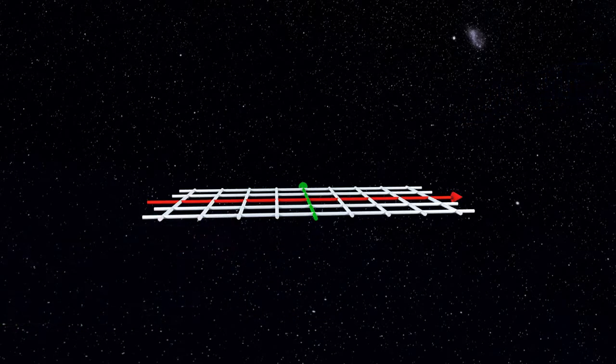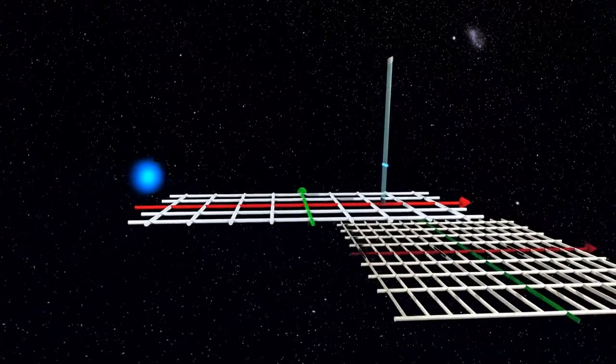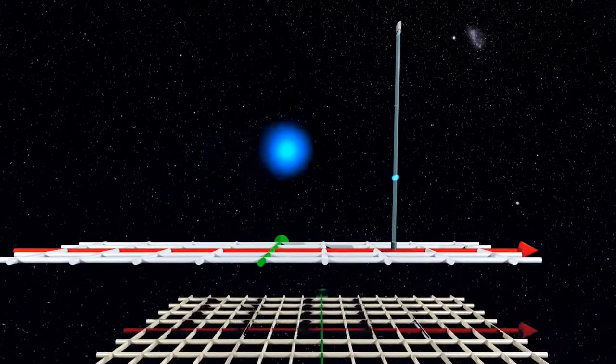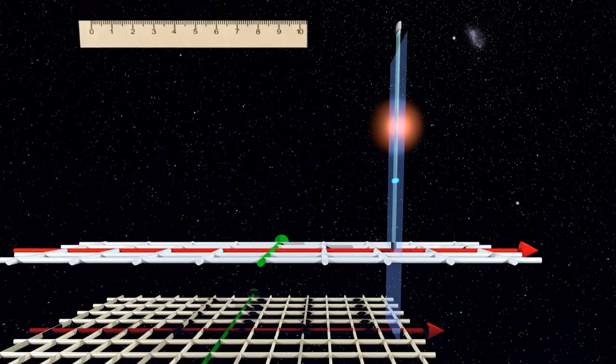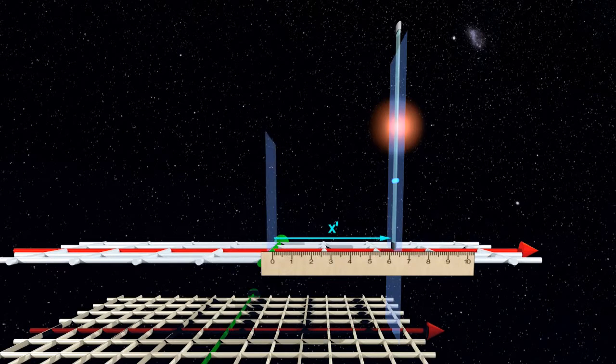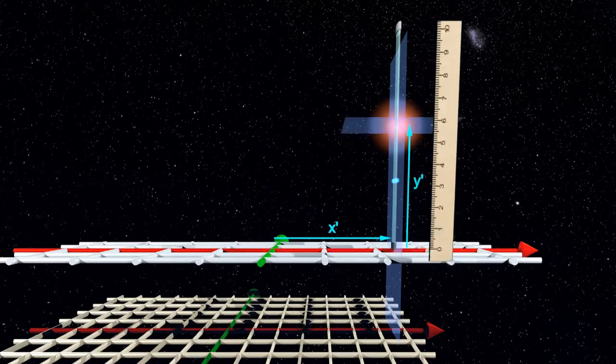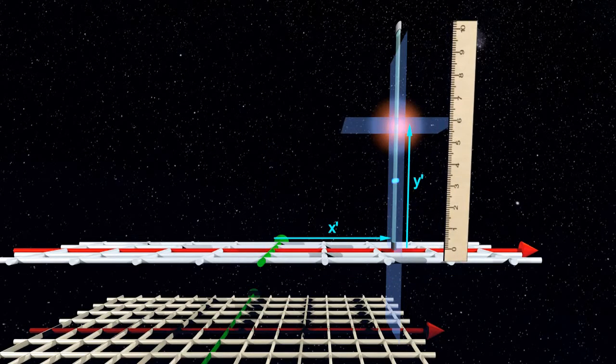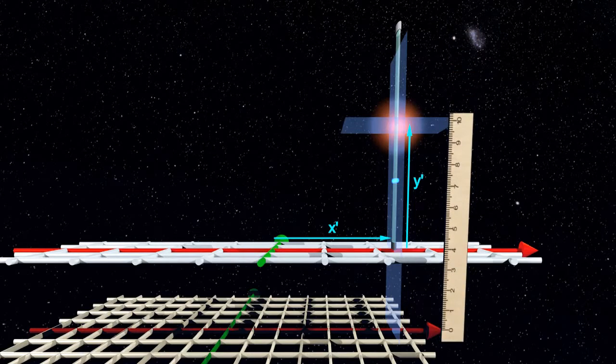We can time its passage with the light clock, and we can measure its coordinates with a ruler. But we can also measure its coordinates relative to the other frame.